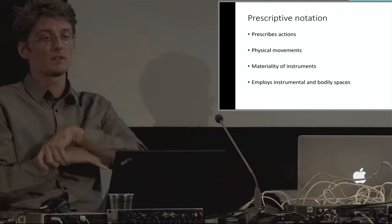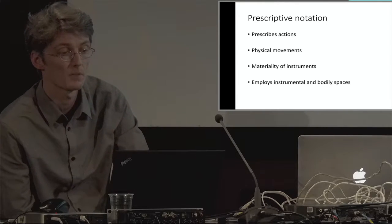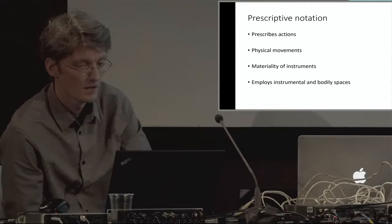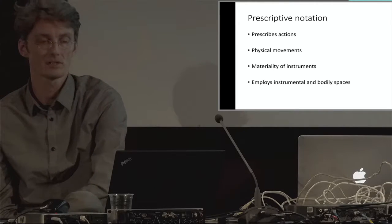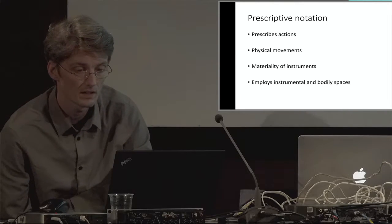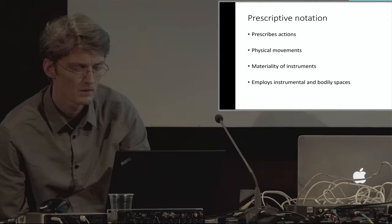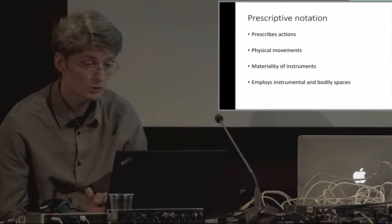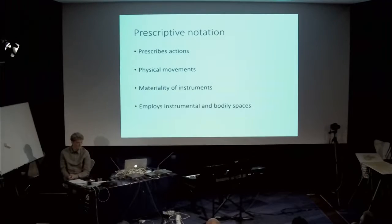In order to demonstrate examples of this objective I will trace a possible evolutionary pathway of a strand of notation called prescriptive notation. Prescriptive notation focuses on the doings or the actions of musicians, so it prescribes actions to be executed instead of indicating how things should sound. So its focus is naturally on the physical movements and the materiality of instruments. And the instrumental and bodily spaces are employed in order to map out those actions. An important aspect of this kind of notation is that it has distanced itself from sound or almost detached itself from it.